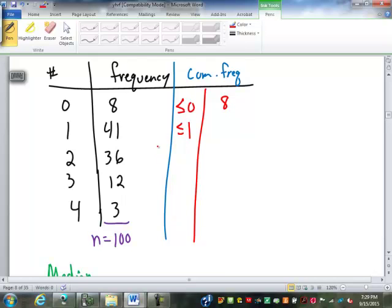So I'm going to add that here just for a second. Cumulative frequency. Less than or equal to 0 is just going to be 8. Less than or equal to 1 is going to be 8 plus 41 is 49. I'm not up to 50 yet. Less than or equal to 2, however, is going to be 49 plus 36, 85.